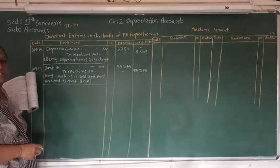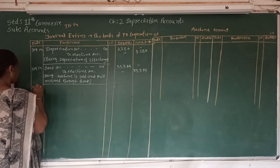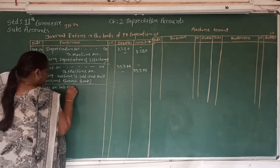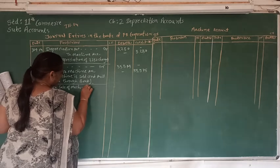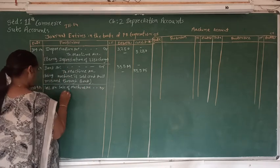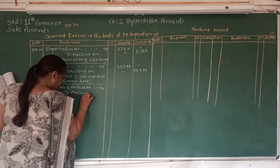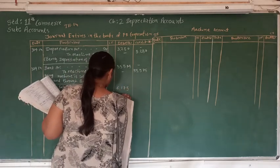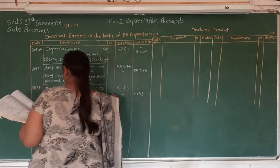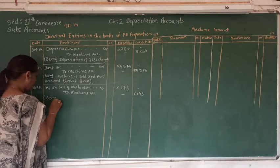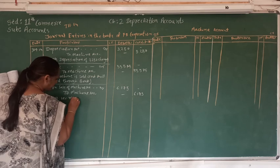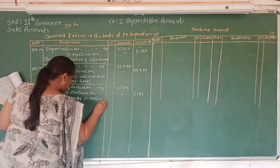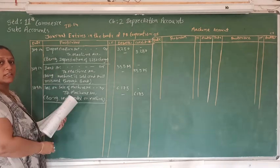On the same day, 30th September 2014, we are going to pass the journal entry for the loss on the machine. That will be: Loss on Sale of Machine Account debit to Machine Account for Rs. 6,175, being 10% loss recorded on the machine.